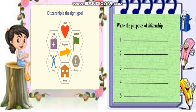Now look at this slide. Here I have given you a diagram — a figure. Please look carefully at this picture. This picture is also a clue to write the purposes of citizenship. Please open page number 94 of your first term booklet. Now I will tell you how you can write the purposes of citizenship with the help of this figure. The first purpose is freedom — the purpose of citizenship is to provide freedom.